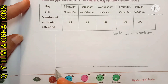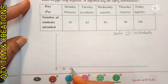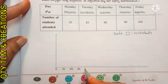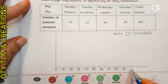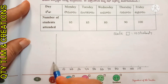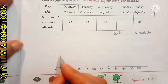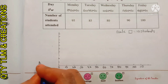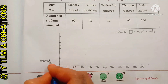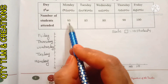We draw a horizontal line and vertical line to prepare the bar graph. On the vertical axis we take number of students: 10, 20, 30, 40, 50, 60, 70, 80, 90, 100. On the horizontal axis we take days of the week: Monday, Tuesday, Wednesday, Thursday, and Friday. Monday attended students are 95, so the bar reaches up to 95.